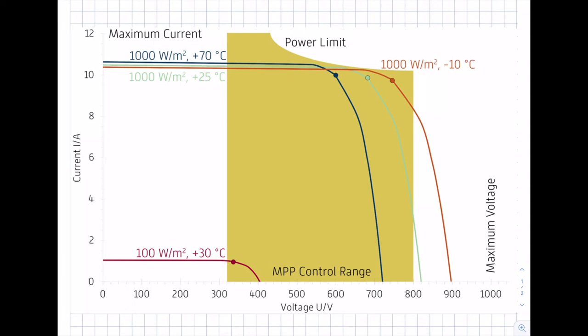Finally, we consider a fourth condition: just 100 watts per square meter irradiance with a module temperature of plus 30 degrees Celsius. You can see the different slope of the curve — smaller irradiance means smaller current. But still, the MPP must be within the MPP control range of the inverter.